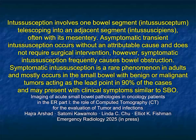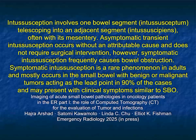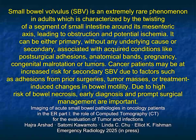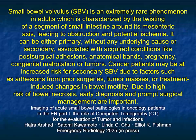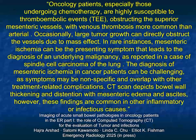We talk about intussusception, which can be due to lipomas or benign polyps, but also malignancies. Melanoma is a leading cause of intussusception, but almost any tumor — from a GIST to an adenocarcinoma or polypoid-type metastasis — can lead to intussusception. We also discuss volvulus, which is the twisting of a segment of small bowel around the mesenteric axis. Most commonly due to adhesions or bands, it can also be due to tumors. Cancer patients may be at increased risk for secondary small bowel volvulus due to adhesions from prior surgery, tumor masses, or treatment-induced changes in bowel motility. Due to high risk of bowel necrosis, early diagnosis and prompt surgical intervention are critical.